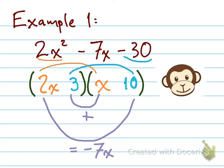So if I multiply the 3 times x, our inner product there, that's 3x, and the outer product will be 2x times 10, or 20x. Can I get negative 7x from 3x and 20x? No, I cannot. So I have to discard those two. I'm going to try something else.